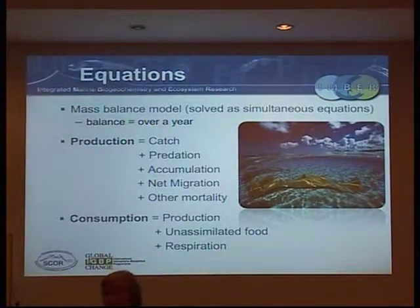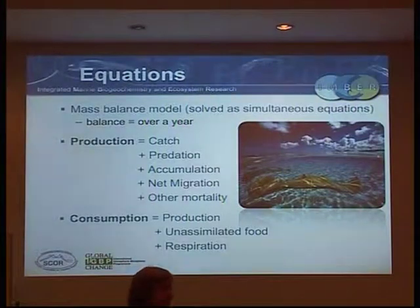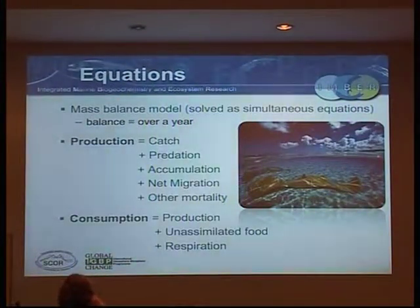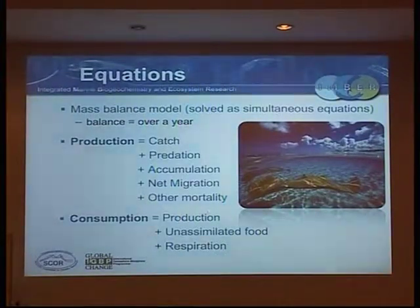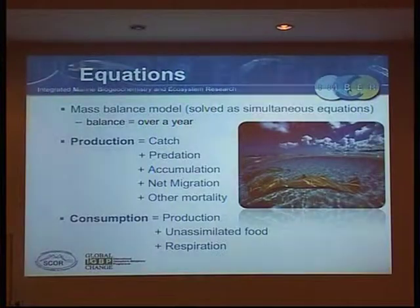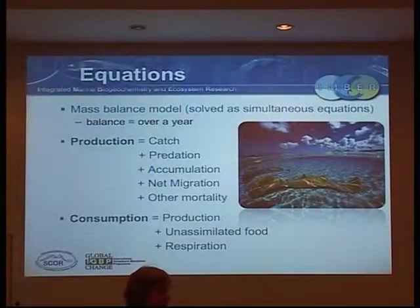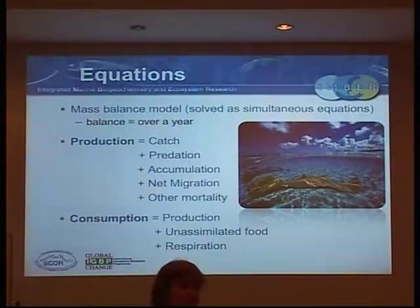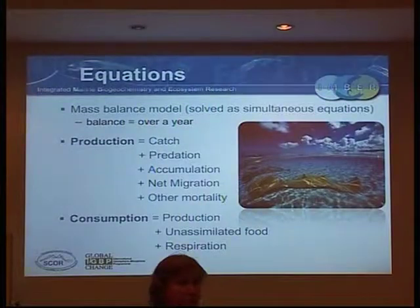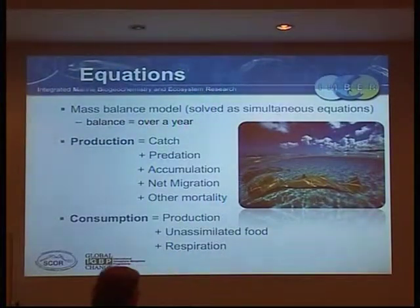Most of the time you don't actually have data for the whole system for a single year, but you've got to try. The other main equation he uses is that what you consume equals production, plus unassimilated food, plus respiration. Those are the three things you're going to account for out of what you consume. That means there are some nice rules of thumb about the ratio of what you consume versus what you see in production - like the 10% rule, that only one tenth of what you consume appears in the next trophic level.